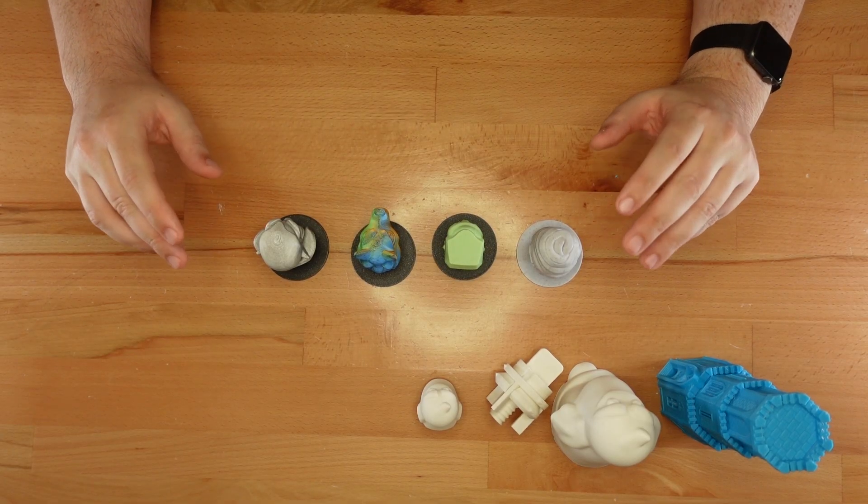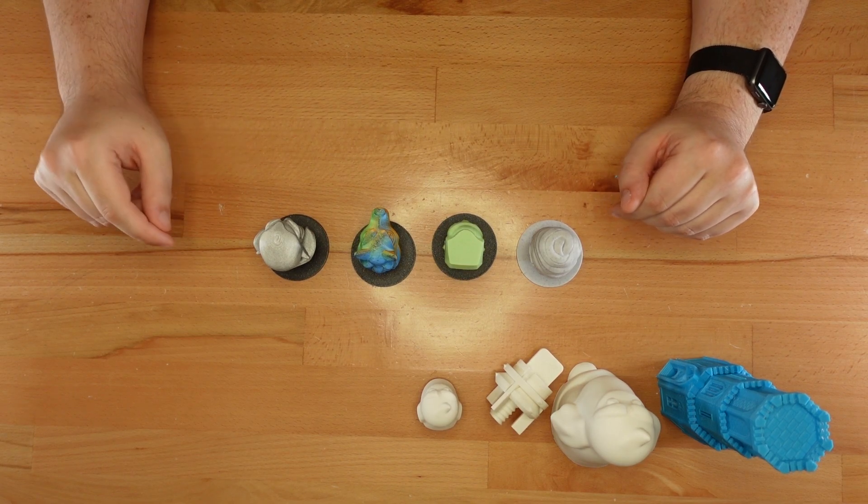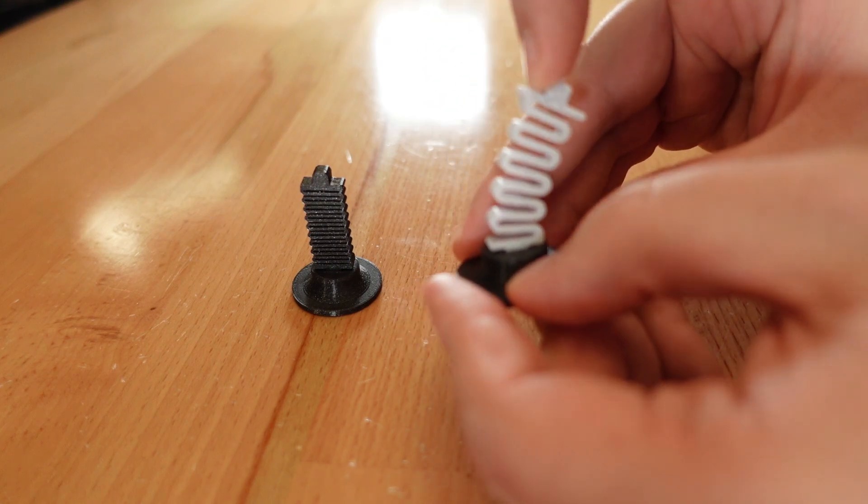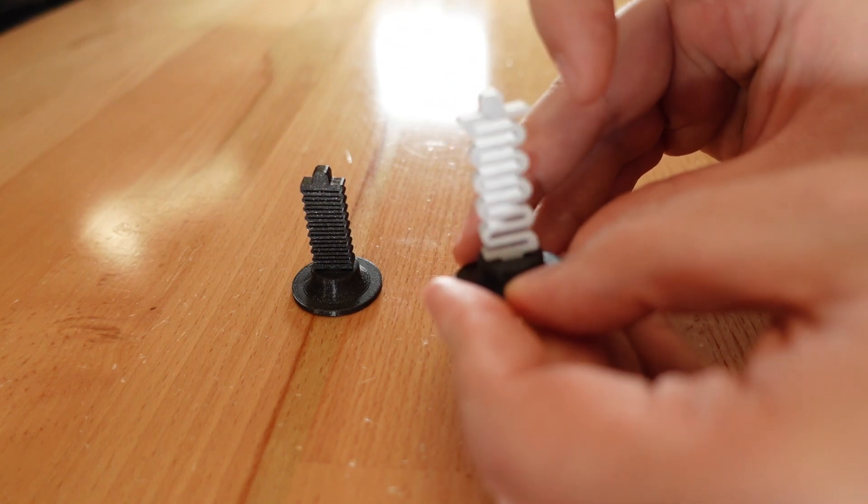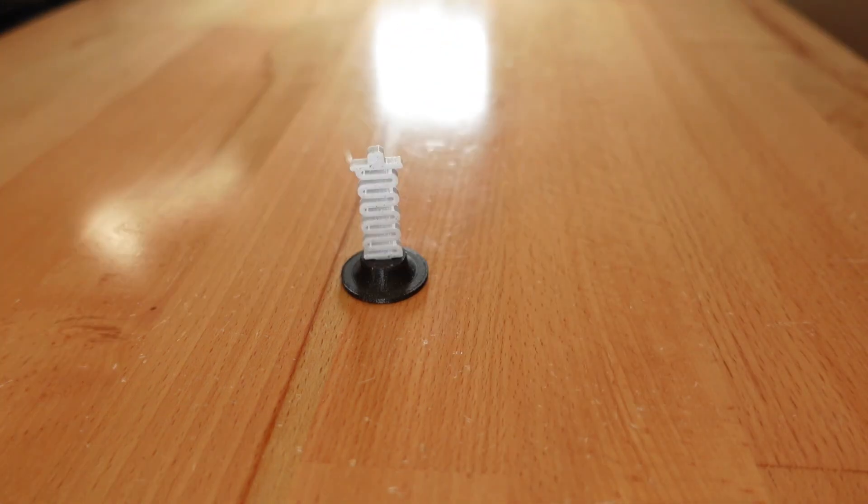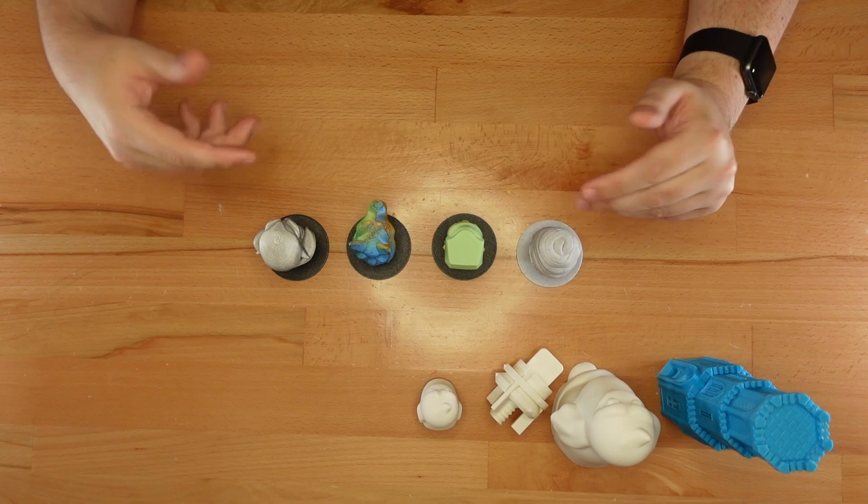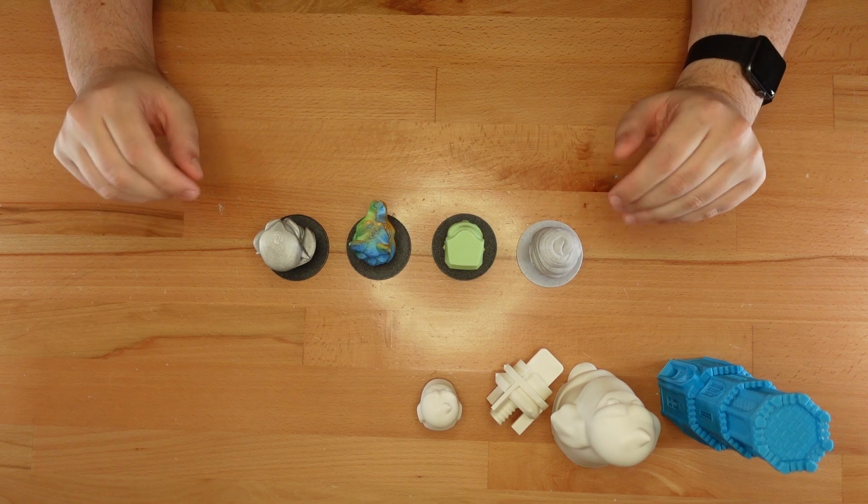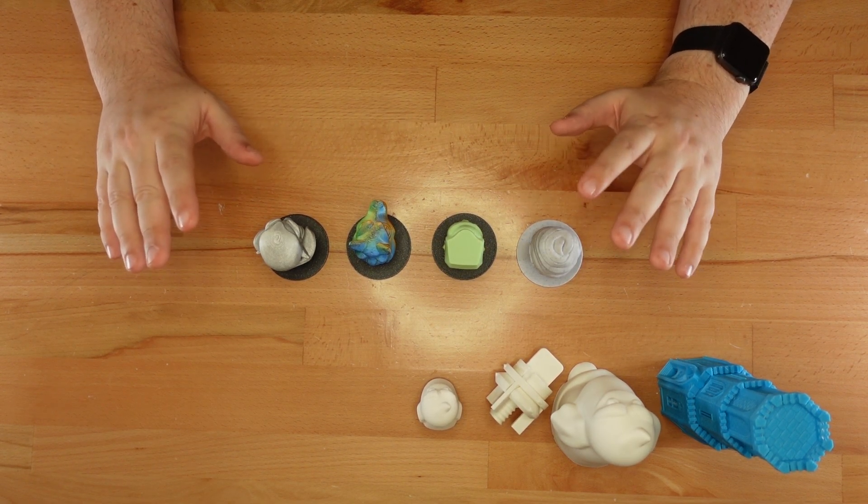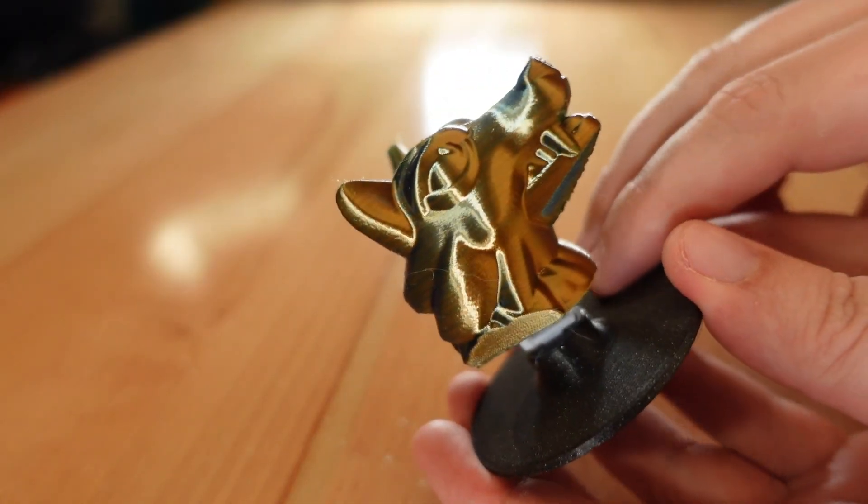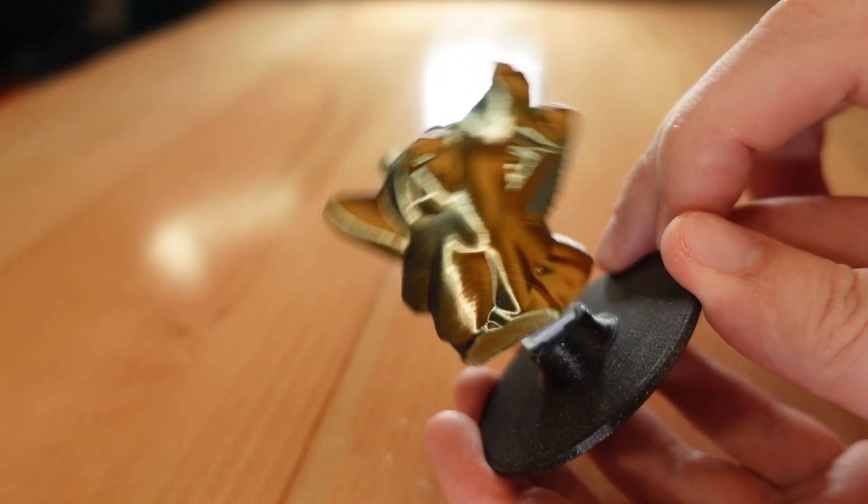All the bobbleheads come with alternate springs and bases. Choose the strong spring if you don't mind giving up some of the bobble for a longer living part. And pick the wider base if you value stability over desk space. Some of my monster designs did require supports. Luckily, that's not the case with the bobbleheads. Even the werewolf with his long snoot can be printed support free.